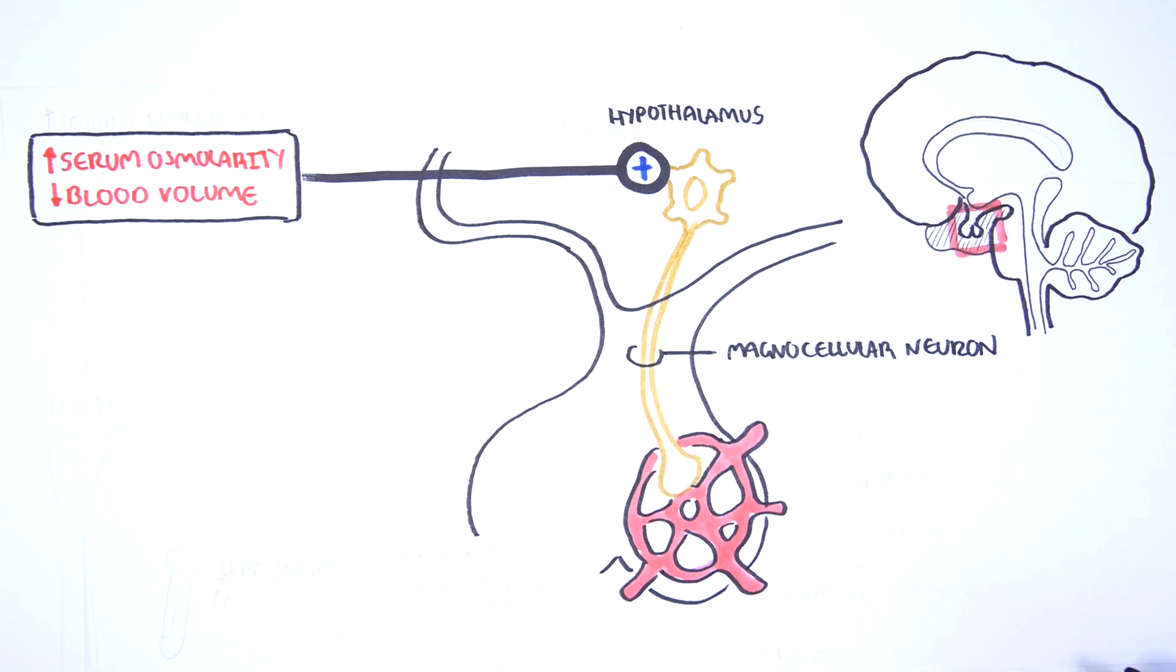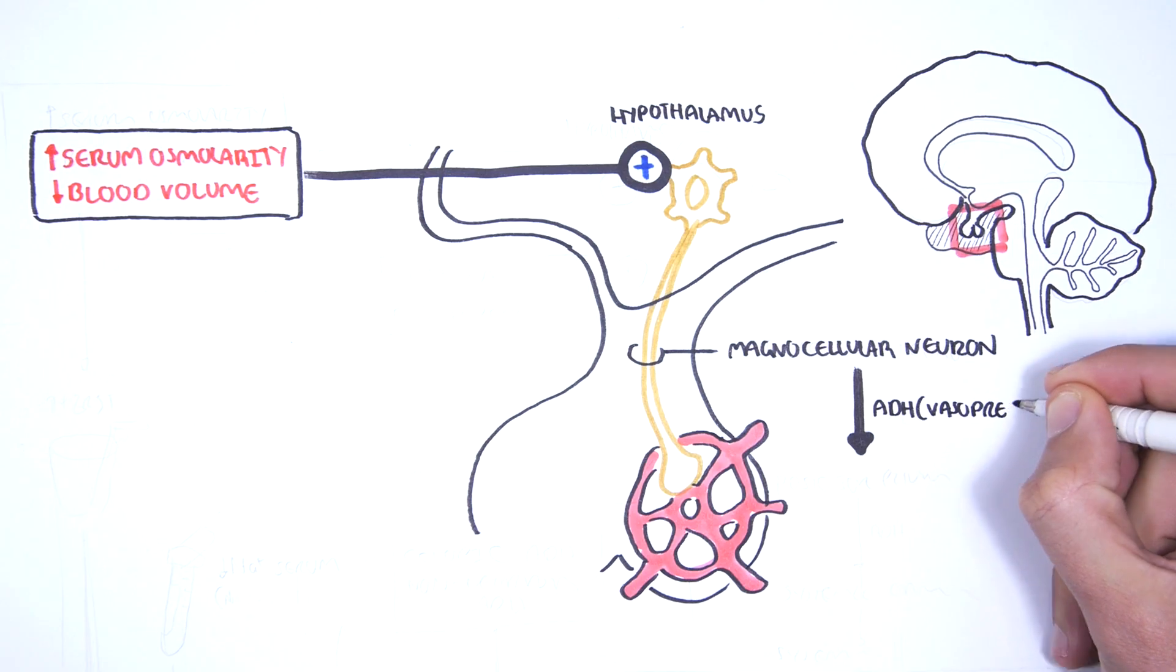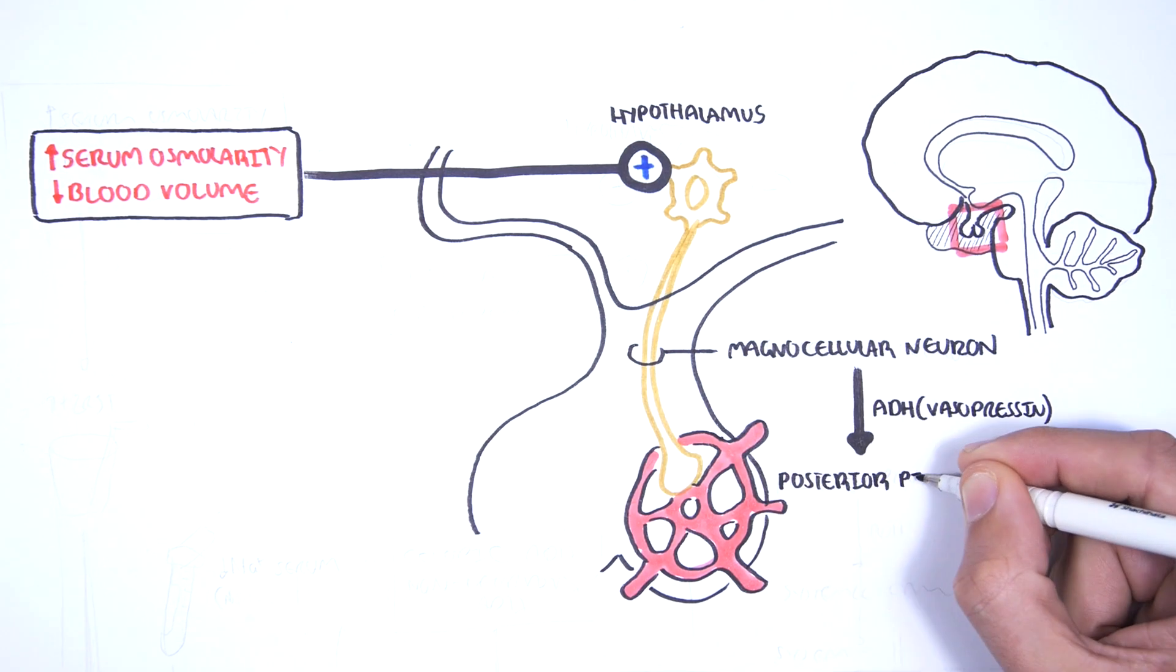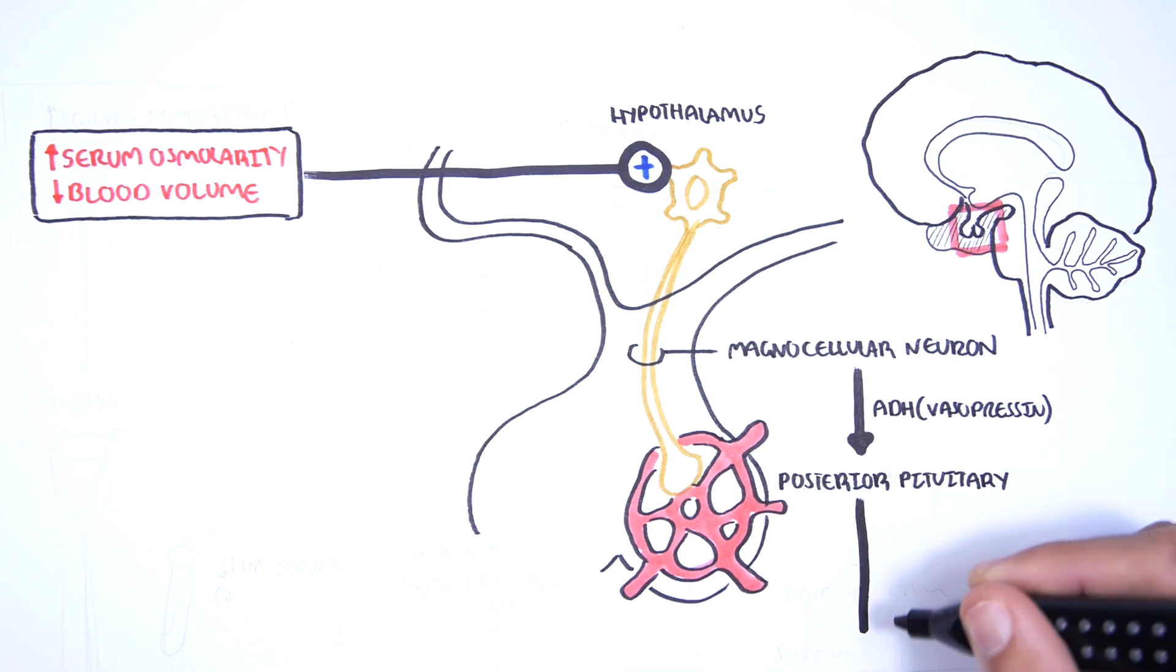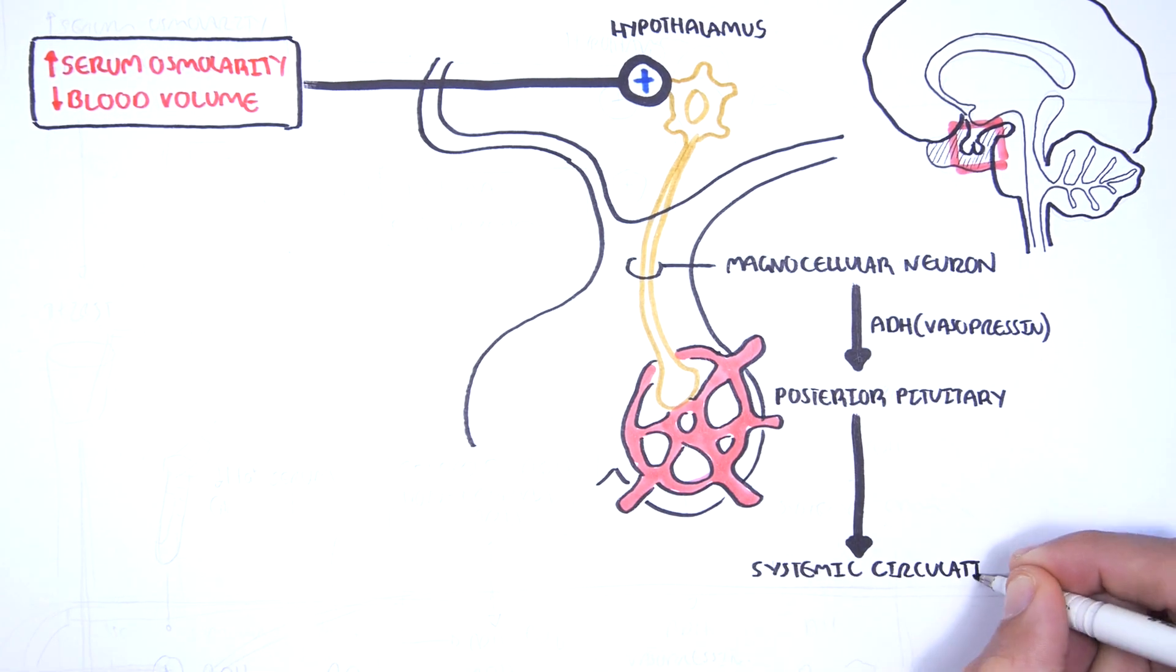ADH is produced by magnocellular neurons, which will carry and then release them from the posterior pituitary gland into systemic circulation.